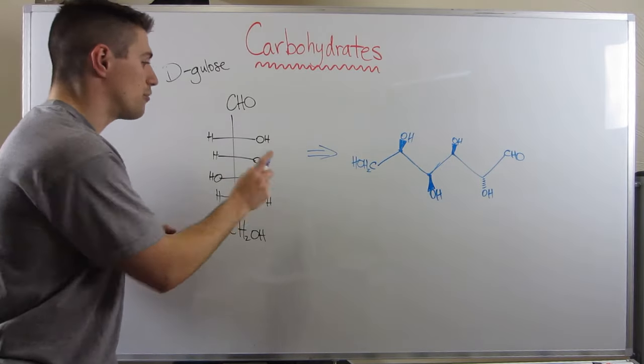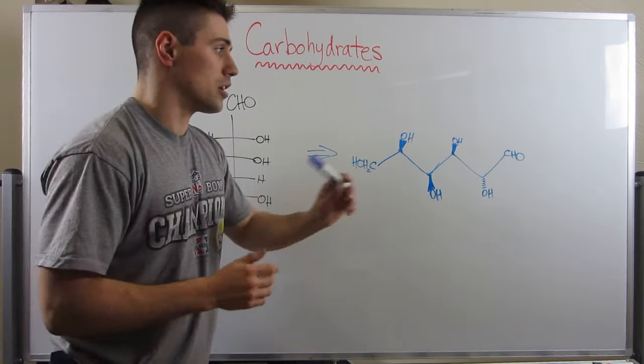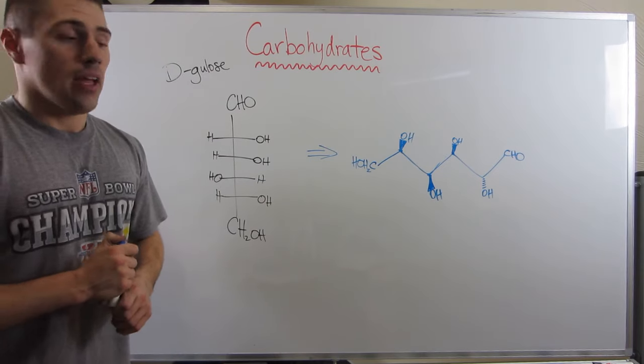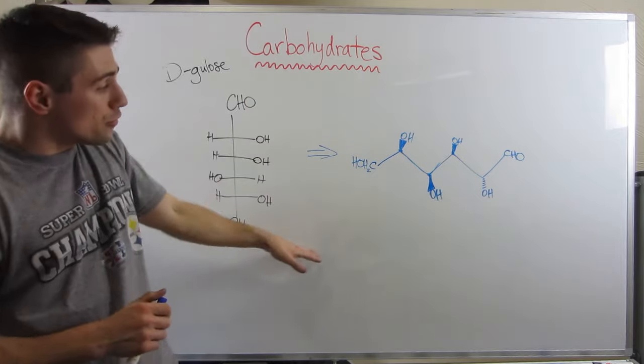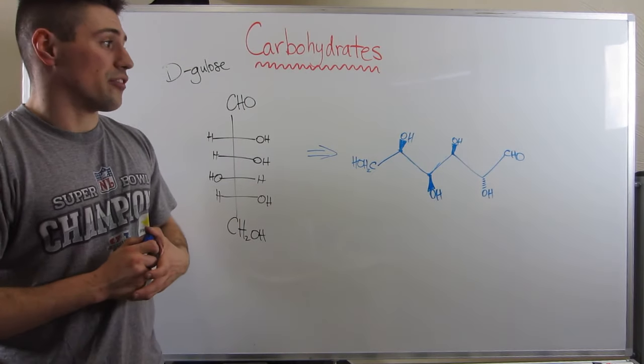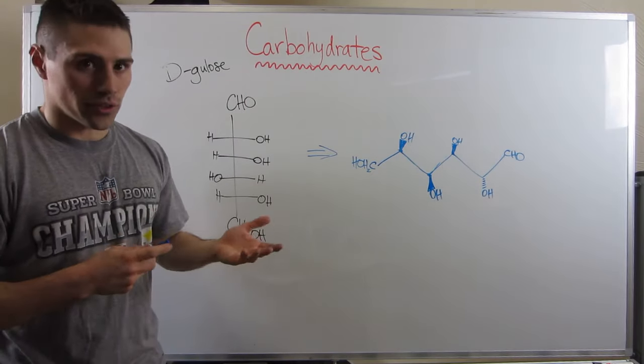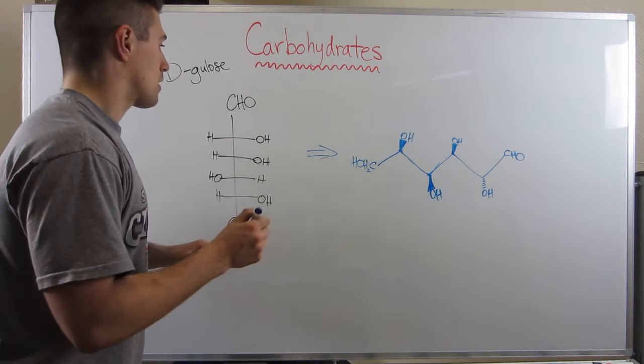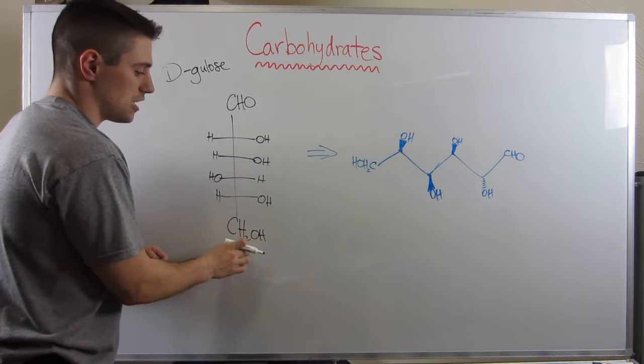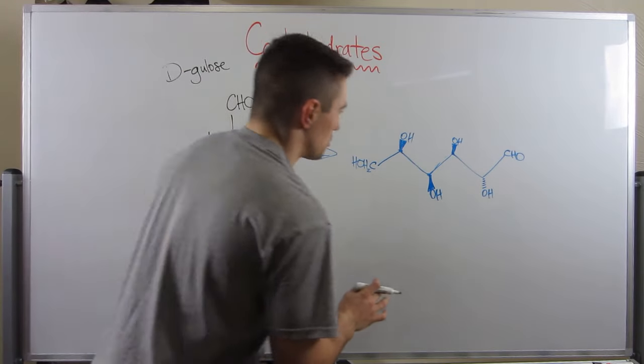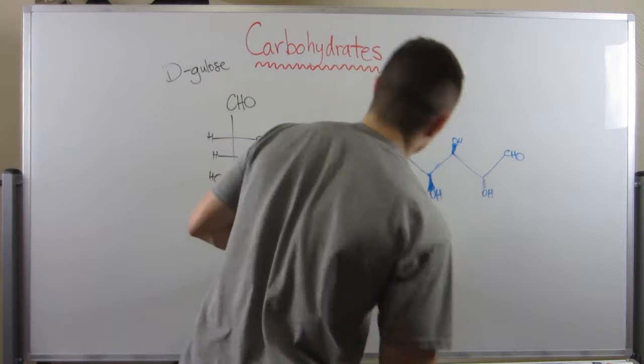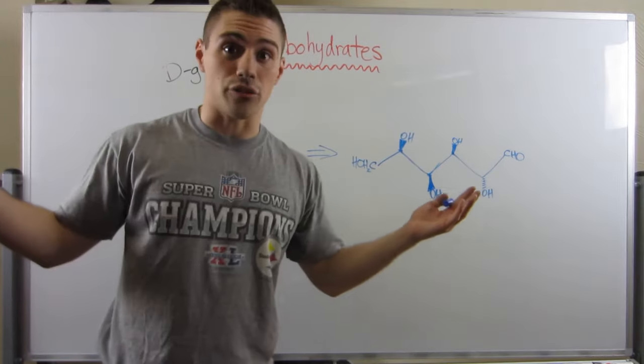That's how you go from a Fischer projection to our straight-line bond structure. And I'm going to leave it as a little bit of a challenge. I'm going to probably make you guys go from this to a Fischer projection on the worksheet. But if you think about it, it's just everything in reverse. All you'd have to do is draw your CHO and your CH2OH at the bottom, draw your lines for how many carbons you have, and then you'd have to just play this game all over again.